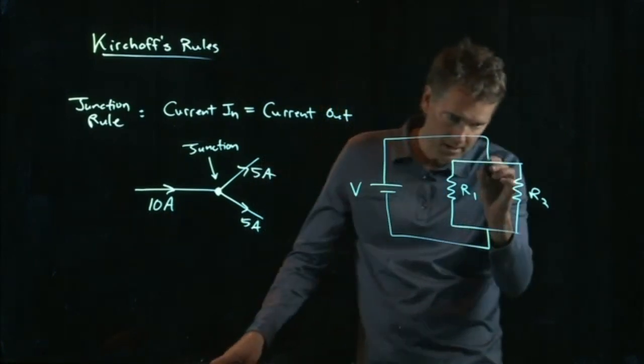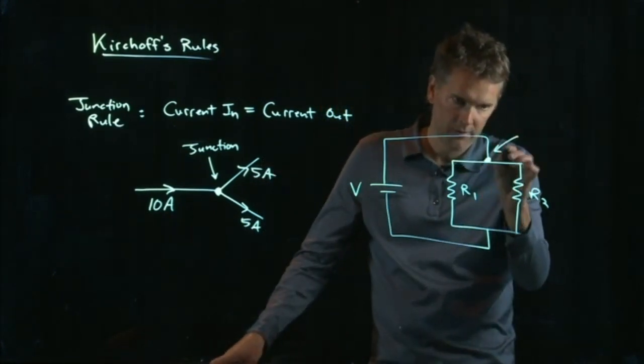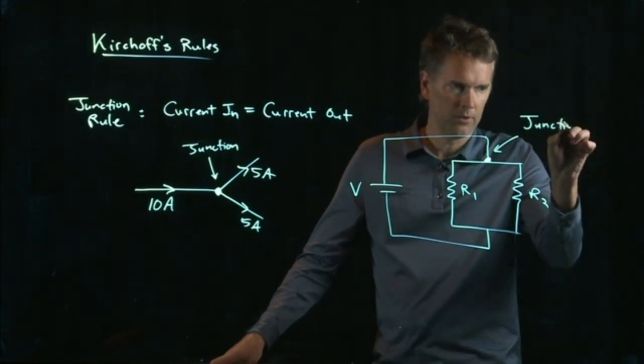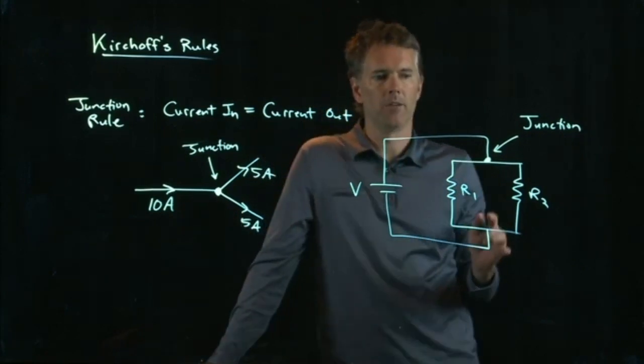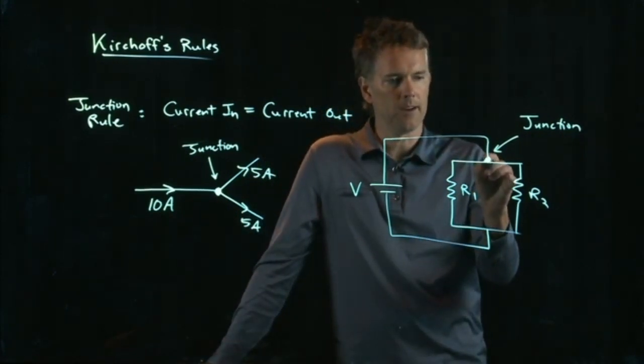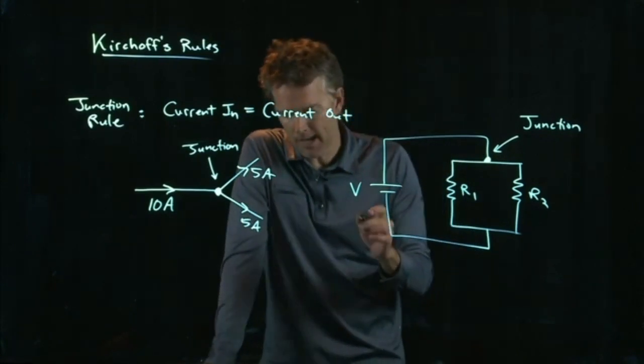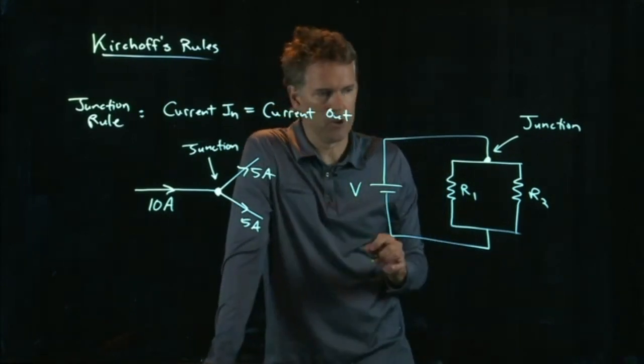This thing right here is a junction. A junction is anywhere the wire splits into two or more wires. So that's a junction right there. And at that junction we have to have current in equals current out.